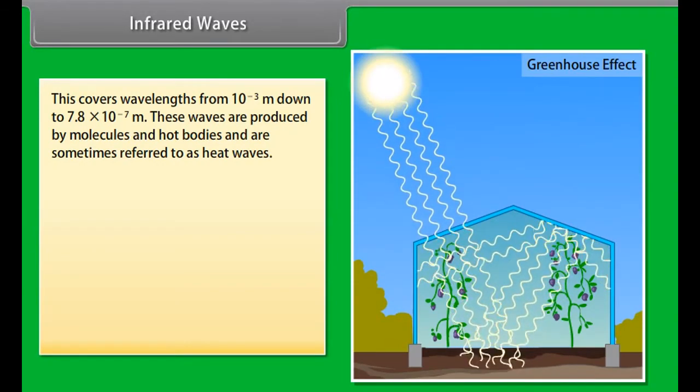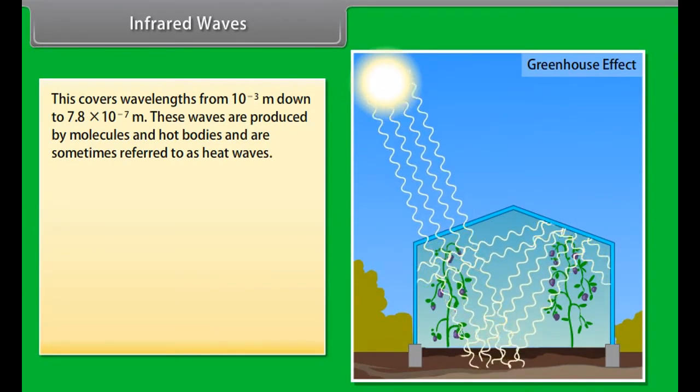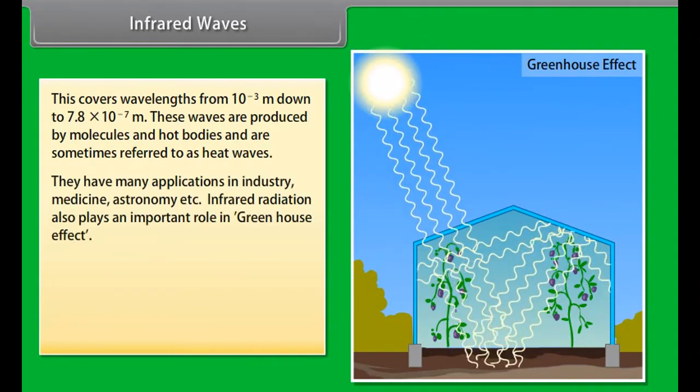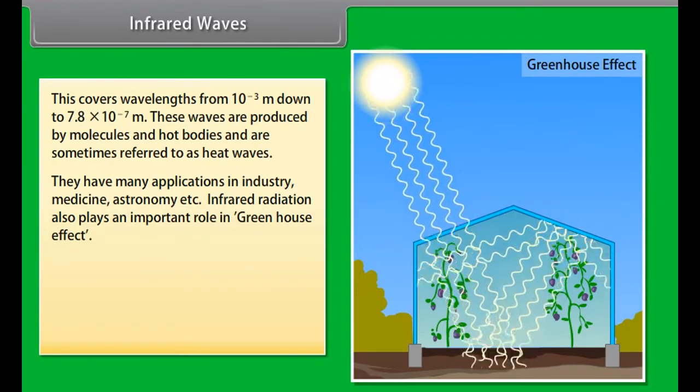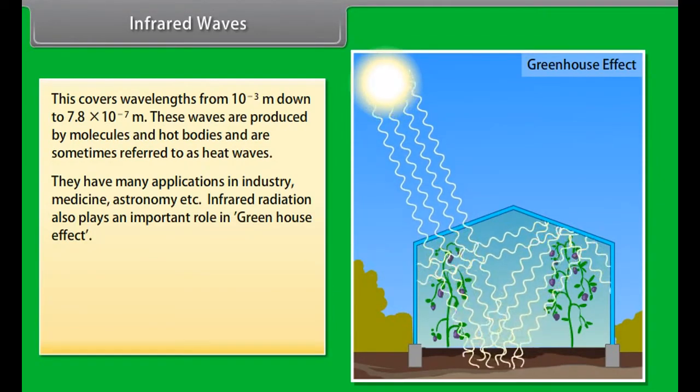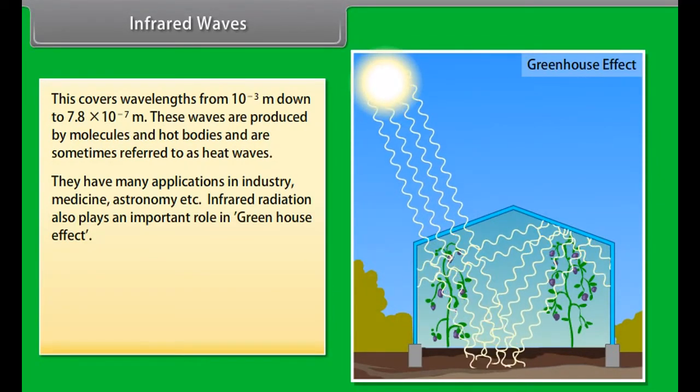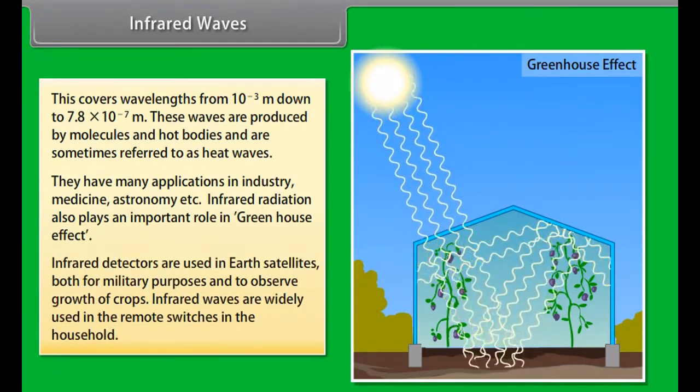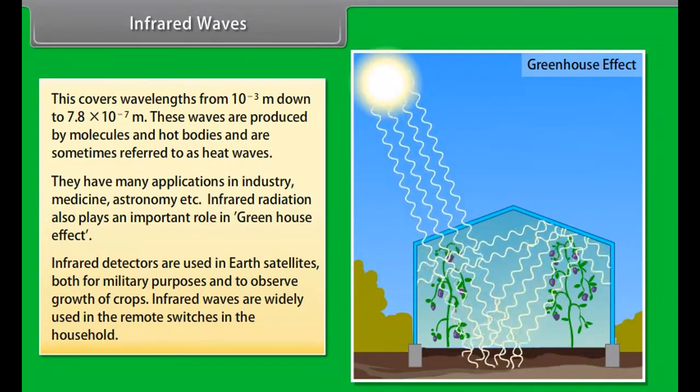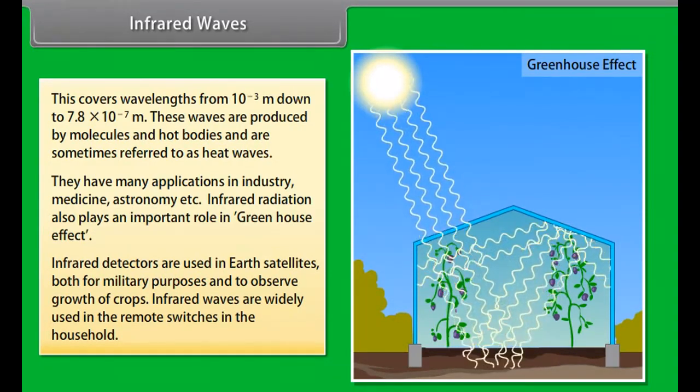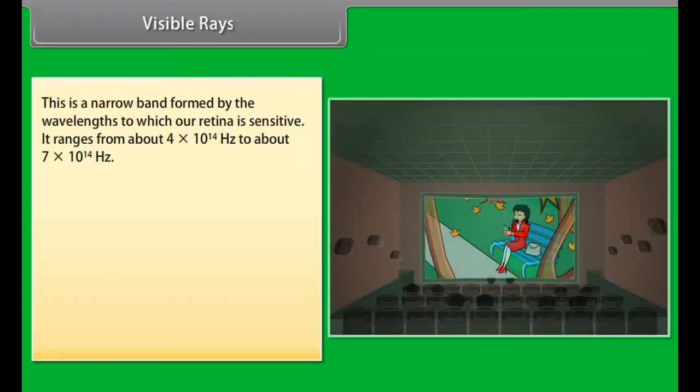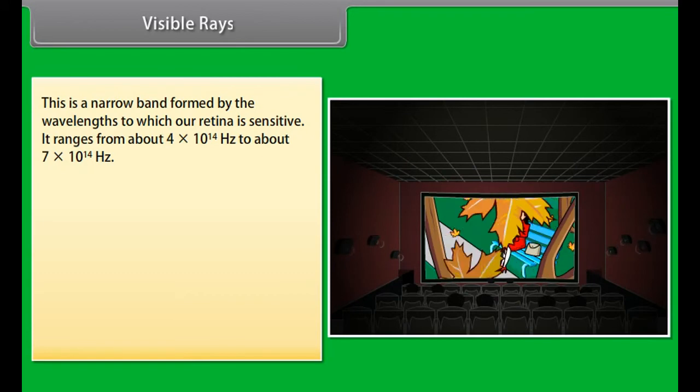Cellular phones utilize radio waves to transmit voice communication in the ultra-high frequency band. Microwaves. Microwaves with frequencies 3 GHz to 300 GHz range are produced by special vacuum tubes like Clistrons, Magnetrons and gun diodes. Due to their high frequency or short wavelengths, they are suitable for the radar systems used in defense and aircraft navigation. Microwave ovens are domestic application of microwaves.